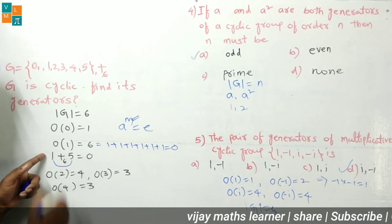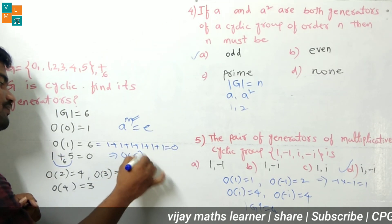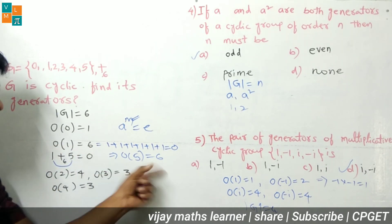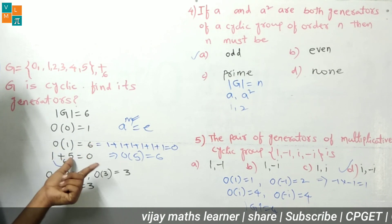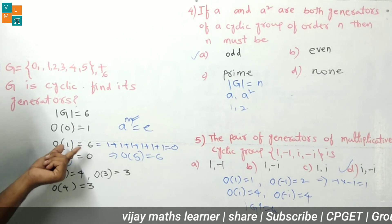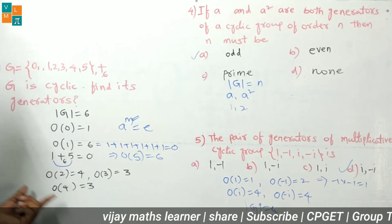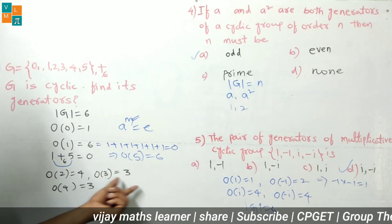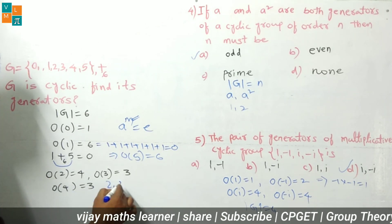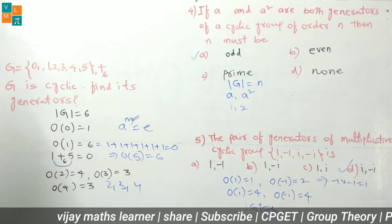Since 5 is the inverse of 1, the order of 5 is also 6. So 1 and 5 are the generators of this group. Checking remaining elements: order of 2 is 3; order of 3 is 2; order of 4 is 3. These orders do not equal 6, so 2, 3, and 4 are not generators. Therefore 1 and 5 are the generators of G.